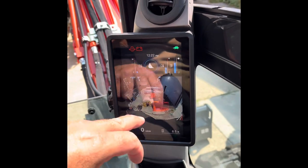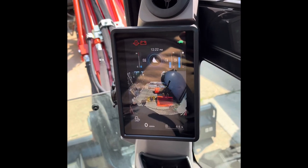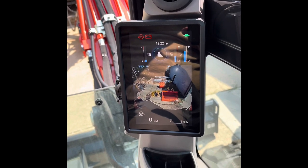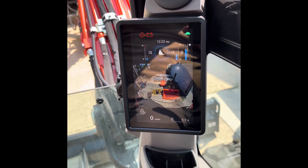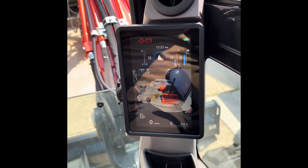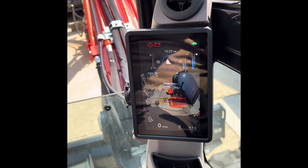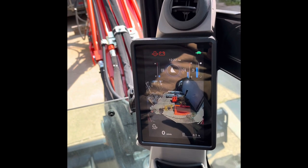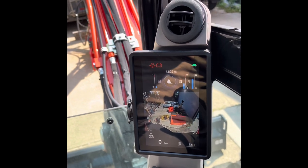The bucket is pretty well pointed right down at the back of the machine there, but you can make those adjustments to whatever view that you need.